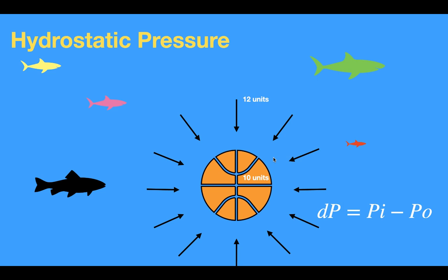So the hydrostatic pressure is the difference between the pressure inside the ball and the pressure outside the ball, and we can use this equation also for the capillaries. In the capillary, we can replace the pressure inside the ball with the pressure inside the capillary, and we can replace the pressure outside the ball with the pressure outside the capillary. So the hydrostatic pressure is the difference between the pressure inside the capillary and the outside of the capillary.